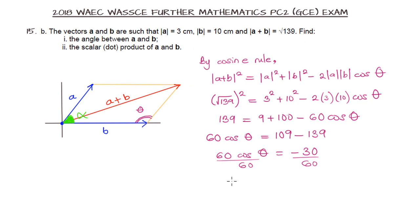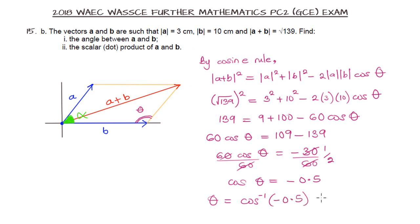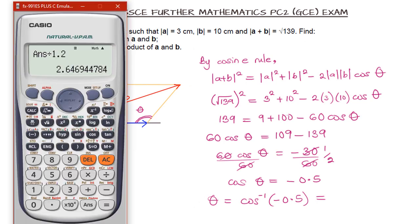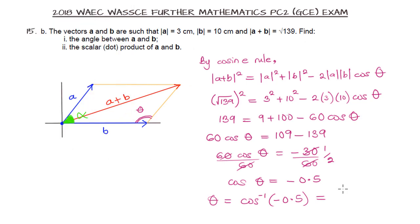So theta equals arccos(−0.5). We must not forget the negative sign. Taking the calculator, that evaluates to 120 degrees. So angle theta is 120 degrees.